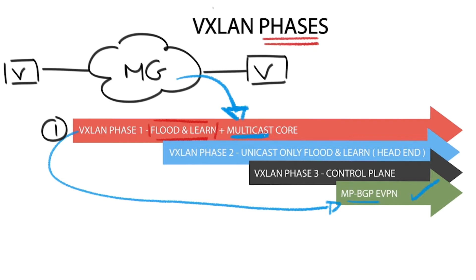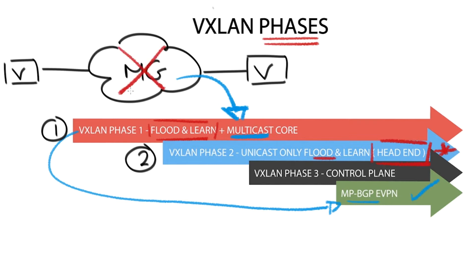When it was originally released, the uptake was pretty slow. We needed a way to remove the requirement for IP multicast in the core and have deterministic layer 2 forwarding. The second phase of VXLAN was slightly better, with unicast-only transport mode flood and learn, and relied on head-end replication to flood via the data plane. It still operated with a flood and learn mechanism but did not rely on having IP multicast enabled in the core to aid the learning process.